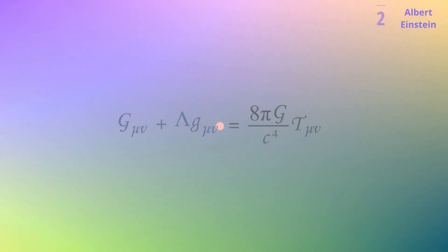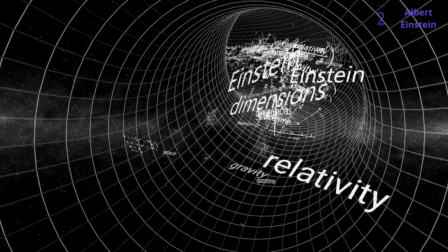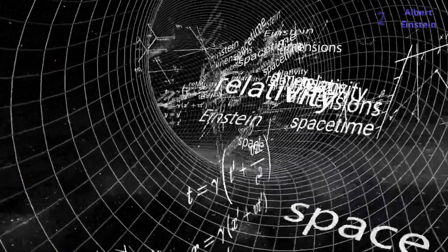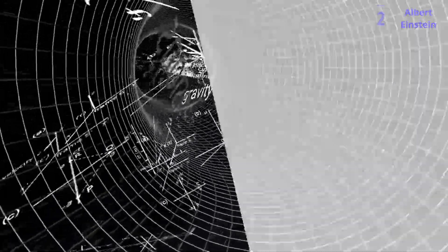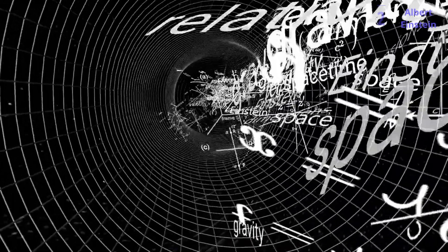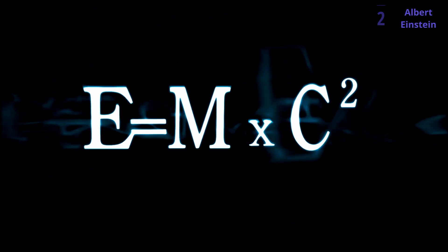Einstein's most famous work, The Theory of Relativity, comes in two parts: Special Relativity and General Relativity. Special Relativity shattered the idea of absolute time and space, proposing that these concepts are relative to the observer. It also introduced the famous equation E equals mc squared, which showed the equivalence of mass and energy.